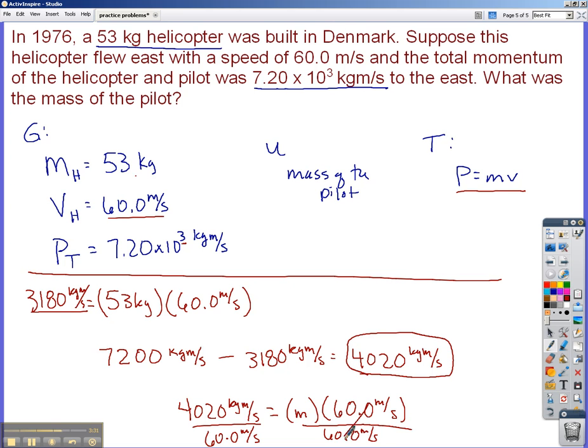That cancels. And that leaves me mass equals 4,020 divided by 60 comes out to 67 kilograms. And then if I see my units, meters per second cancel out, leaving me with kilograms. So the mass of the pilot was 67 kilograms. This was the P of the pilot, right here.